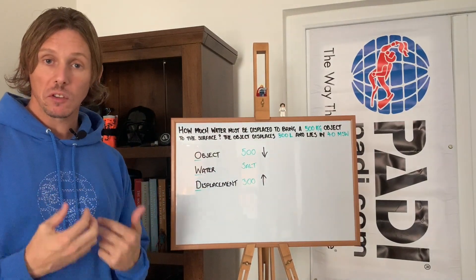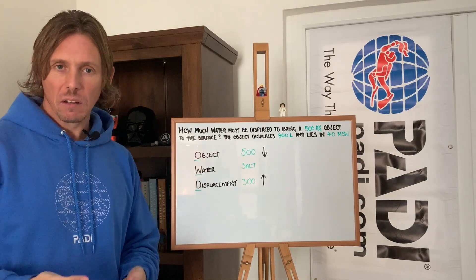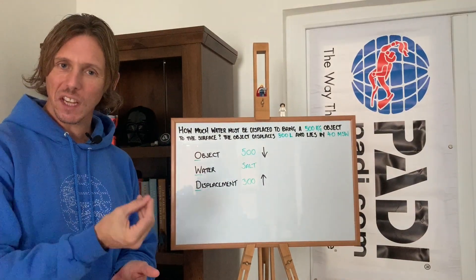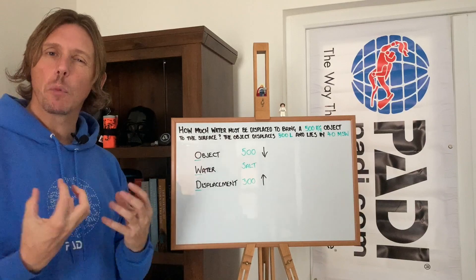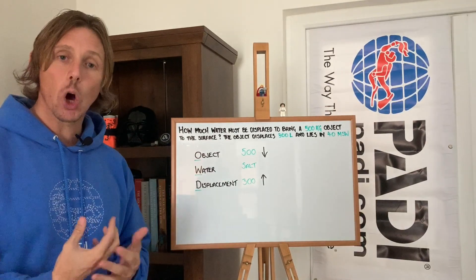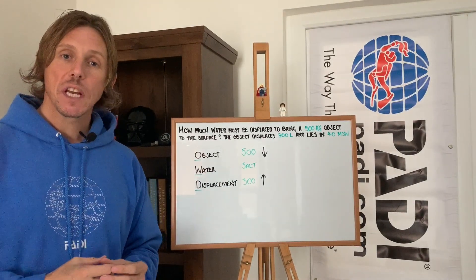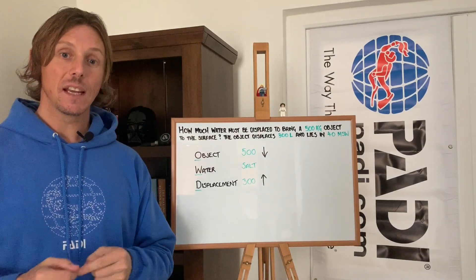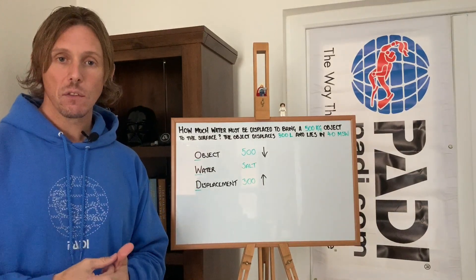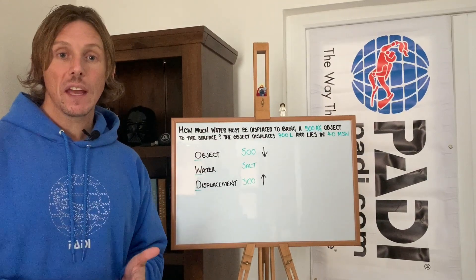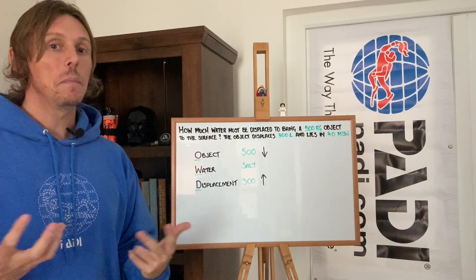Here are the three things we need to successfully work these questions out. We need to know the OWD — I remember that using the acronym of Open Water Diver. O means object: does the question give you the weight of the object? W is water: does the question tell you the type of water that the object sits in — salt water or fresh water? And D is displacement: does the question give you the displacement of the object? If all three things are present, we can successfully work this out.